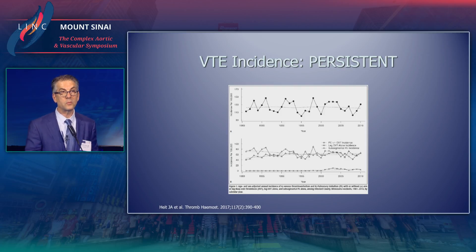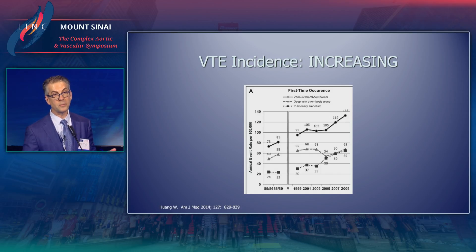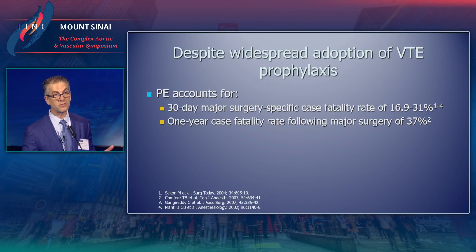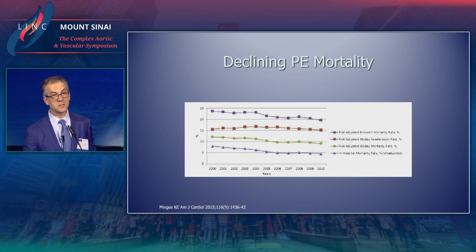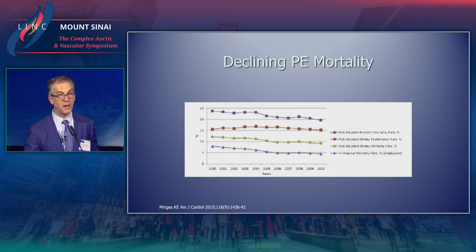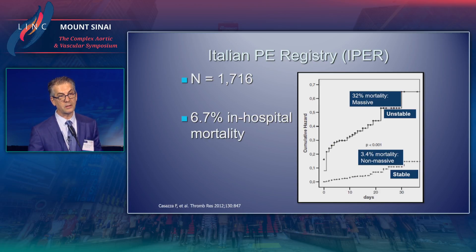A study done in Olmstead County, Minnesota shows that the incidence of VTE is persistent — not changing. From a study in Worcester, Massachusetts, the incidence of VTE is actually increasing. PE accounts for a lot of surgical-related deaths, with a one-year case fatality rate following major surgery in about a third of patients. Besides mortality, those involved in hospital administration are very concerned about readmission, and despite aggressive treatment of PE, there's still a readmission rate of at least 15% in this patient population because of comorbidities.